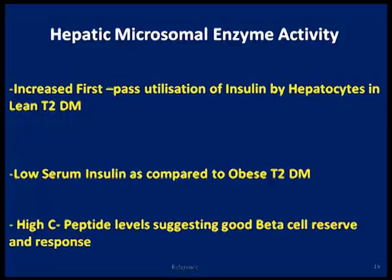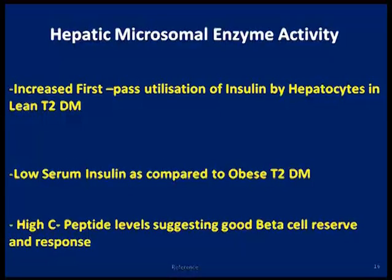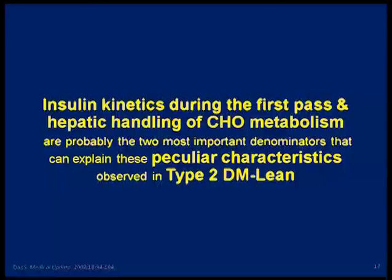Regarding hepatic microsomal enzyme activity: because of this enhanced first-pass insulin utilization by hepatocytes in lean patients, serum insulin levels are lower compared to obese diabetics — where hyperinsulinemia is characteristic. The high C-peptide levels in lean patients suggest a good beta-cell reserve. The pancreas secretes both insulin and C-peptide, but since insulin is extracted by the hepatocytes, serum insulin is low while fasting and stimulated C-peptide levels remain good. So insulin kinetics during first-pass and hepatic handling of carbohydrate metabolism are the two most important denominators explaining the peculiar characteristics of lean type 2 diabetes.